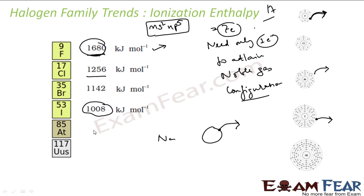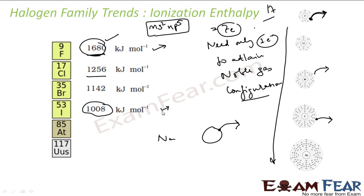All values are positive, meaning energy is required to pluck the electron. The halogen family has seven electrons and doesn't want to lose one, because losing one means needing two electrons to attain the noble gas configuration, which is harder to achieve. That's why they have very high ionization enthalpy. Going down the group, atomic size increases, so the nucleus has less control over the outermost electron. In iodine, the nucleus doesn't have much control, so it has lesser ionization enthalpy than fluorine.